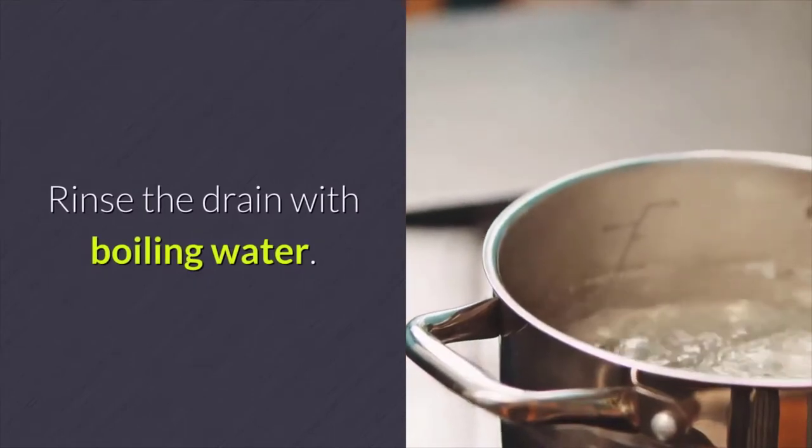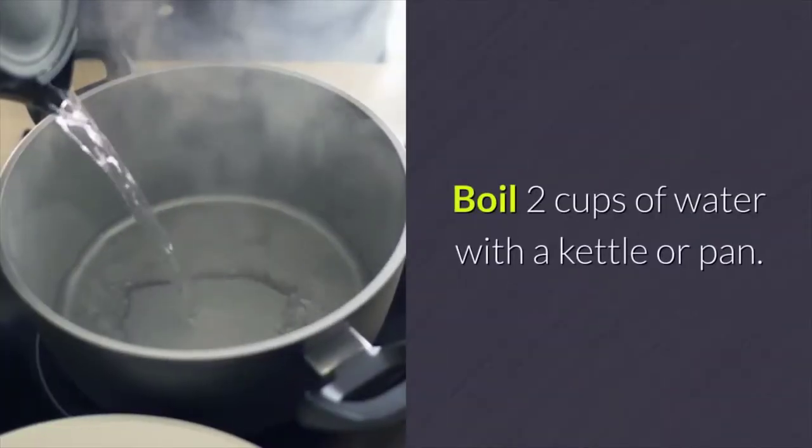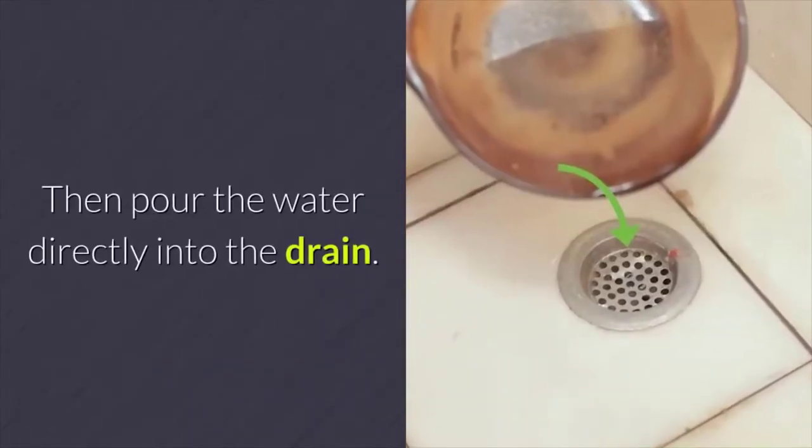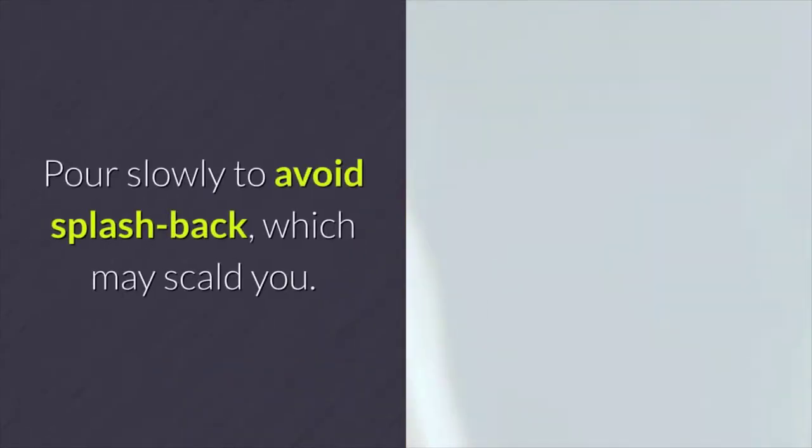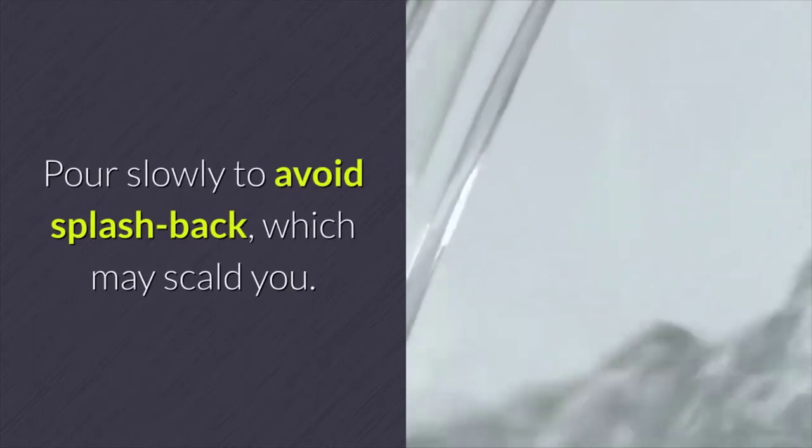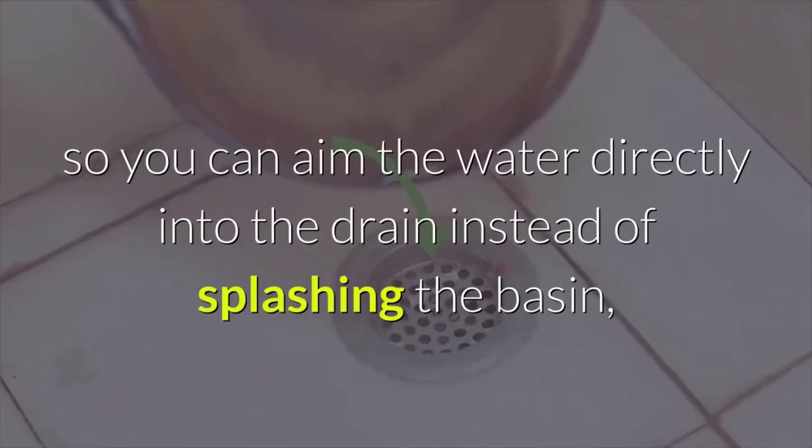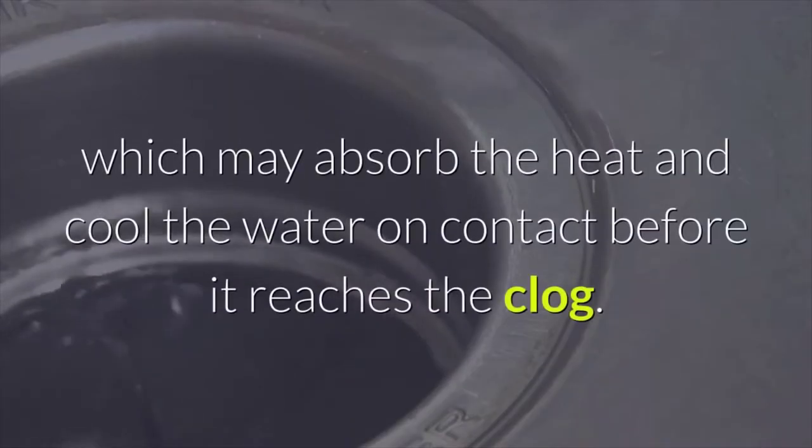Rinse the drain with boiling water. Boil 2 cups of water with a kettle or pan. Then pour the water directly into the drain. Pour slowly to avoid splash back, which may scald you, so you can aim the water directly into the drain instead of splashing the basin, which may absorb the heat and cool the water on contact before it reaches the clog.